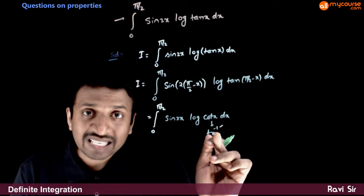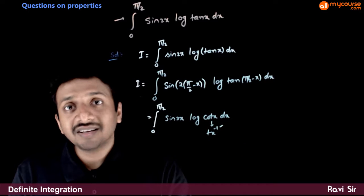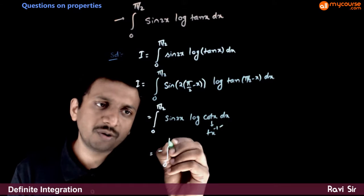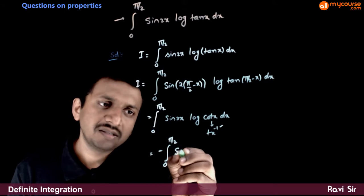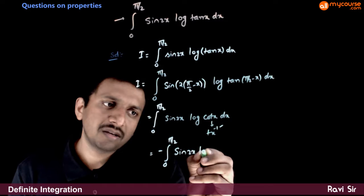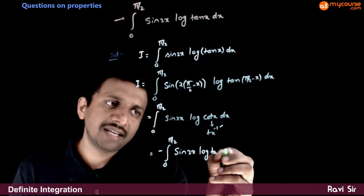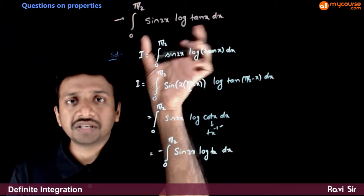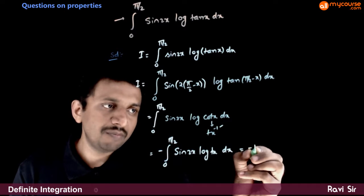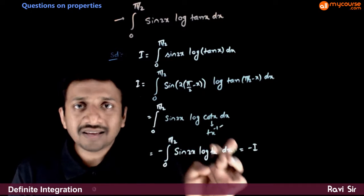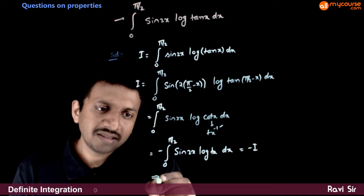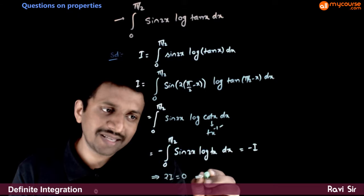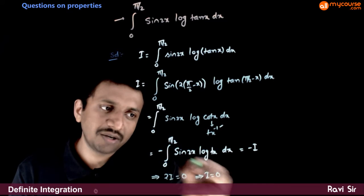So the power inside the log comes out as a multiplier, giving minus of the integral from 0 to π/2 of sin(2x) · log(tan x) dx. This is nothing but the original integral I. So that equals minus I. Therefore, I equals minus I, which implies 2I equals 0, and hence I equals 0.